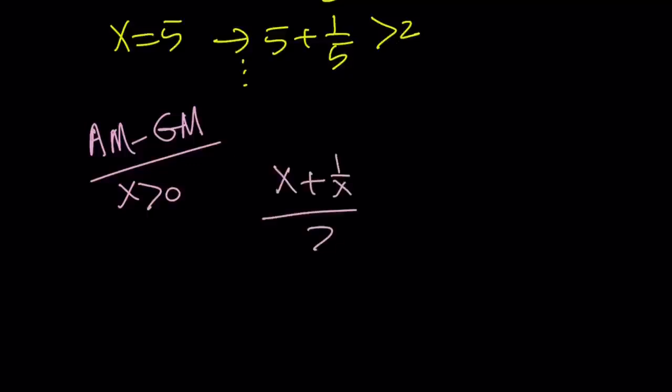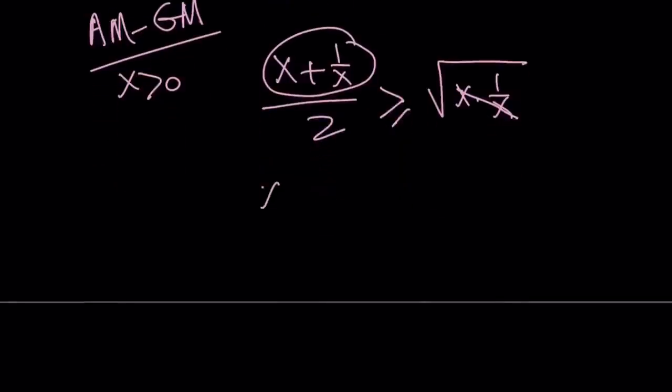x plus 1 over x divided by 2, which is the arithmetic mean or the average, is always going to be greater or equal to the square root of x times 1 over x. But x times 1 over x, as long as x does not equal 0, is equal to 1. So from here, we get the following. x plus 1 over x is greater than or equal to 2.